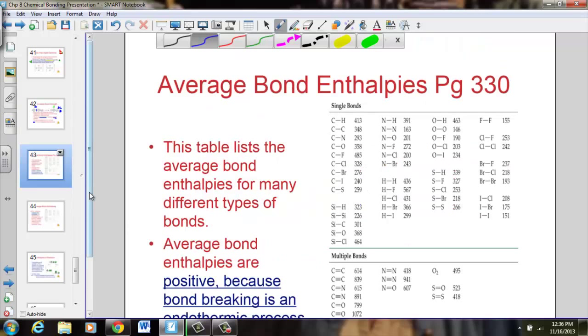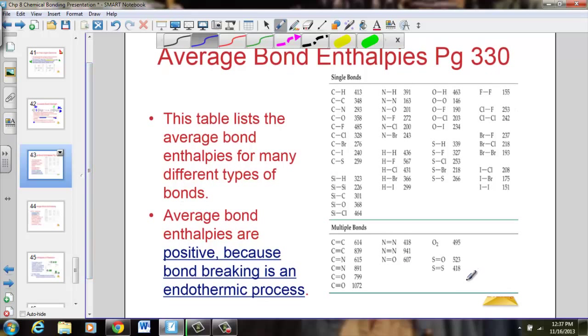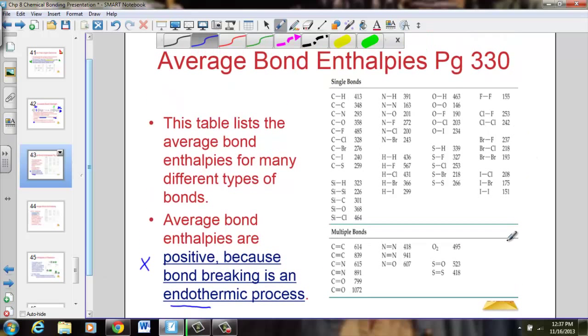We have these charts provided in our chemistry book. Page 330 in our book is a handy test-taking tool page. The bond enthalpy shows how much energy is required to break single bonds, double bonds, and triple bonds. Notice that every one of these is positive because breaking a bond is an endothermic process. The table lists the average bond enthalpy for many different types of bonds. This chart is mandatory to have ready for solving any bond enthalpy calculation.